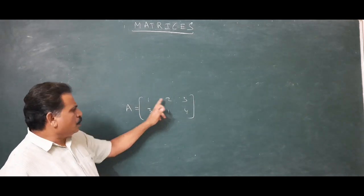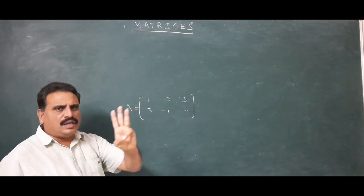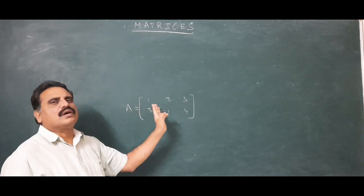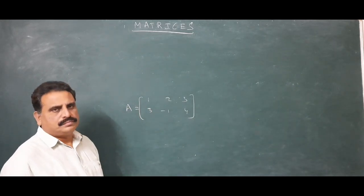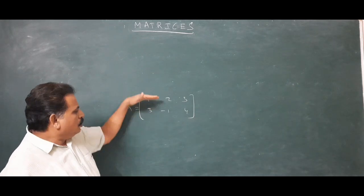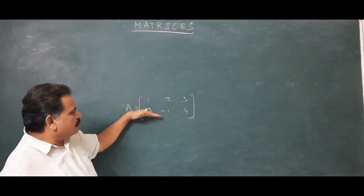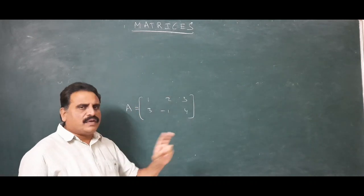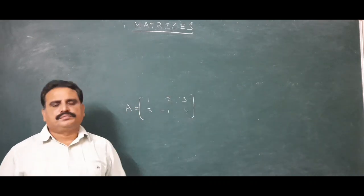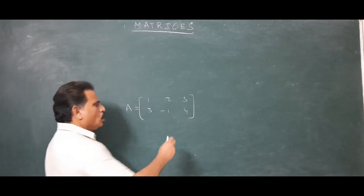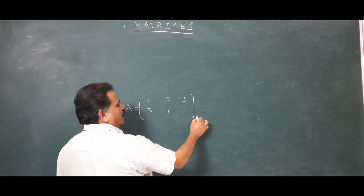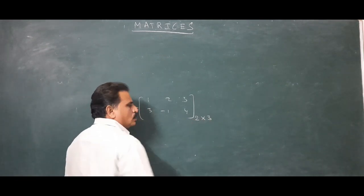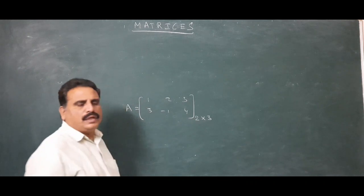In each row, the number of elements is 3, which is equal to the number of columns. Each row contains 3 elements and each column contains an equal number of elements too. This matrix contains 2 rows and 3 columns, so its size is 2 into 3, that is read as 2 by 3.